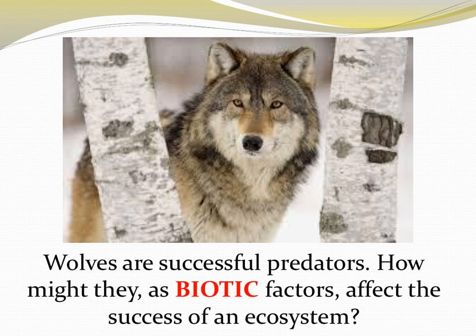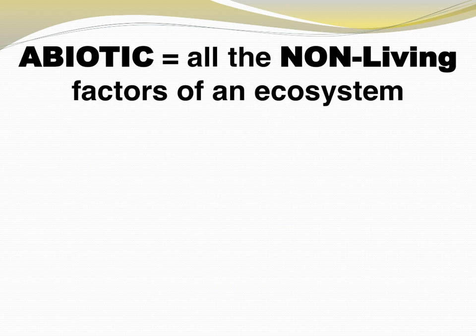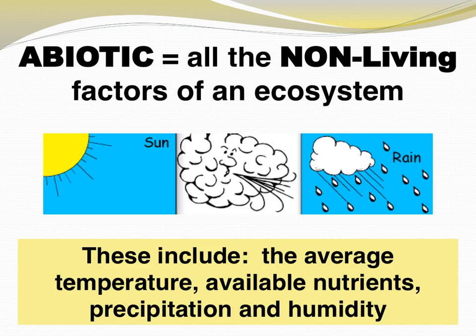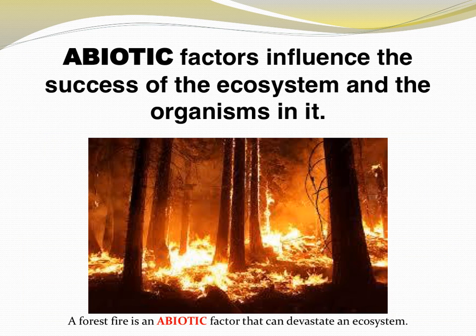Biotic factors affect the success of an ecosystem. Wolves are very successful predators — how might they, as biotic factors, affect the success of an ecosystem? Abiotic factors include the average temperature, available nutrients, precipitation, humidity, and a lot more. Abiotic factors influence the success of an ecosystem and the organisms in it. A forest fire would certainly devastate an ecosystem.